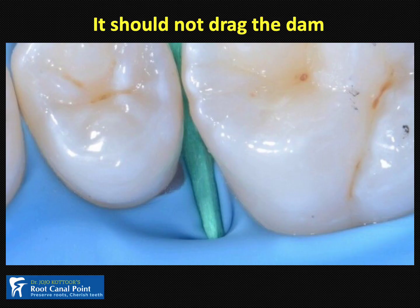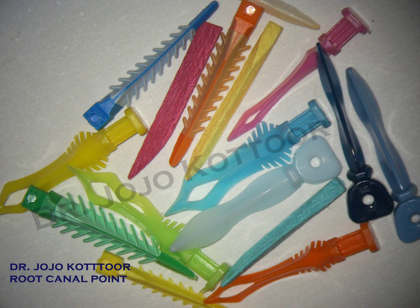While performing all these wedging techniques, keep in mind you should not drag the rubber dam while placing wedges. If you drag the dam it will expose the gum and the primary goal of rubber dam isolation will be compromised. Also, an important characteristic unique to the wooden wedge — not achievable with a 3D plastic wedge — is tooth separation. Never forget this important feature, which can only be achieved with a wooden wedge.